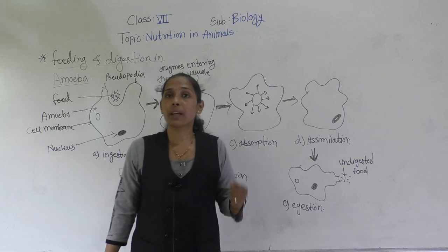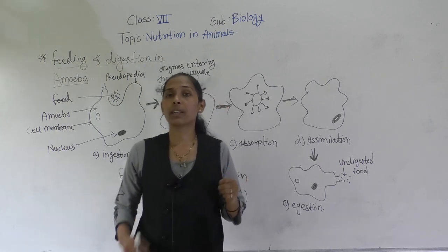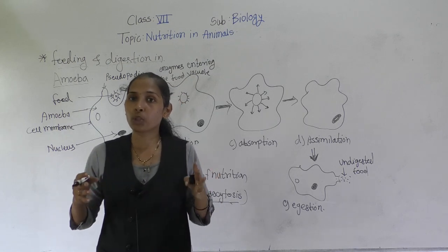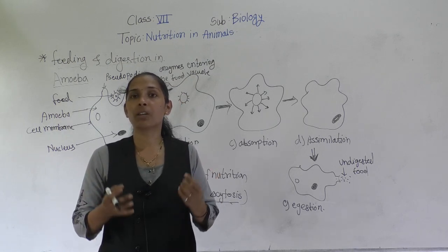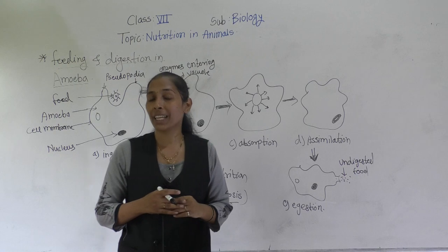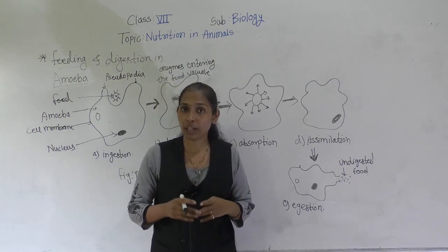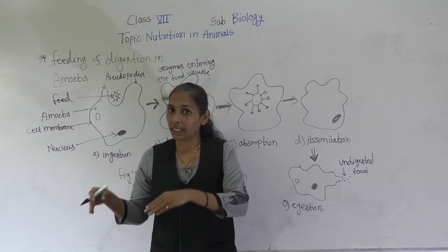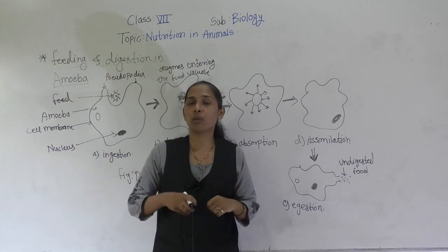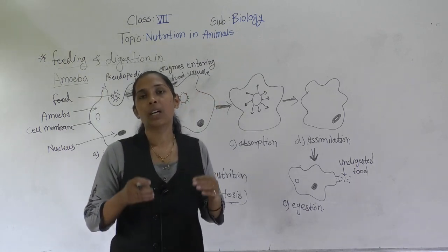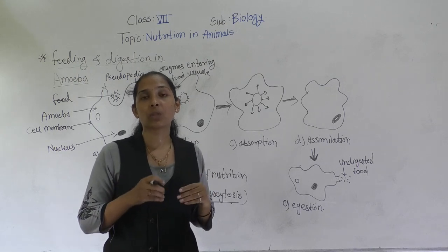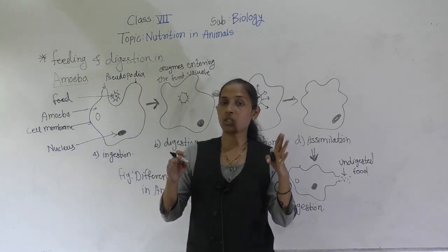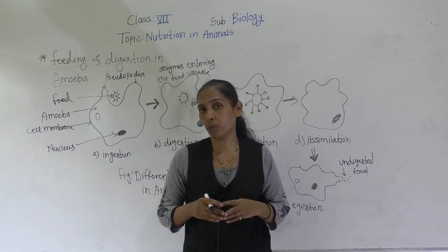These finger-like projections, or pseudopodia, are continuously made for two purposes: locomotion — to move from one place to another — and to engulf food and take it inside the body. All activities of absorption and digestion of food are performed by the single cell of amoeba.